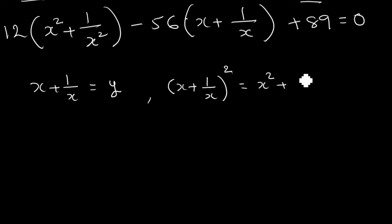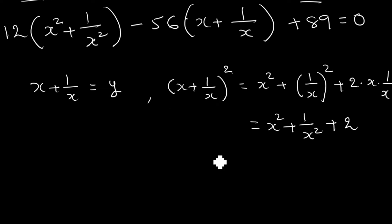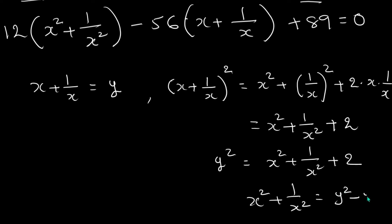So (x + 1/x)² becomes x² + 1/x² + 2, and the x terms cancel. So simplifying: y² = x² + 1/x² + 2. Subtracting 2 from both sides, x² + 1/x² = y² − 2. Now substitute this into the above equation.